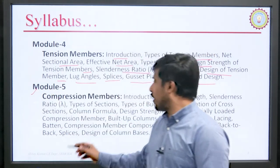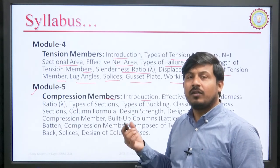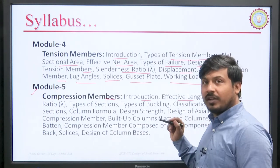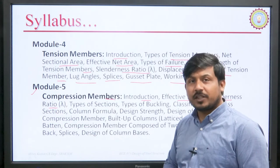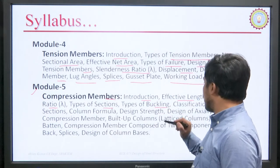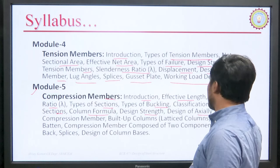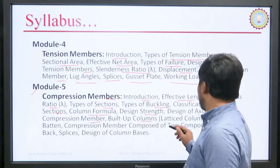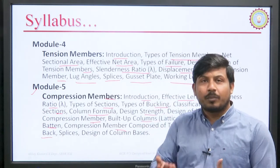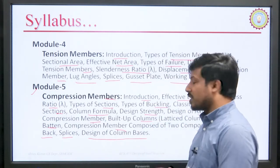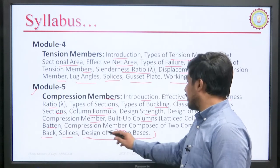In Module 5 we will focus on compression members. We will look at the introduction to compression members, effective length, slenderness ratio, different types of sections, types of buckling — which is really important — classification of cross sections, column formula, design strength, design of axially loaded compression members, built-up columns, lacing, battens, compression members composed of two back-to-back components, splices, and design of column bases — including how the column transfers load to the foundation.